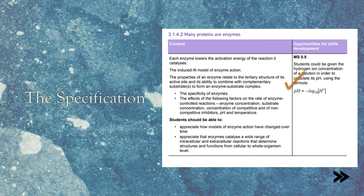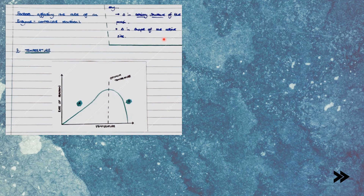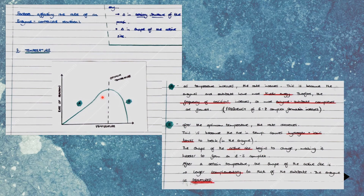Next, we'll look at the effect of a few factors upon the rate of enzyme-controlled reactions. First, temperature. As the temperature increases, the rate of reaction increases, because enzyme and substrate molecules have more kinetic energy, so the frequency of collisions between these molecules increases, and more enzyme-substrate complexes are formed per minute. However, after the optimum temperature, the rate begins to decrease. This is because the rise in temperature causes hydrogen and ionic bonds which hold the enzyme's tertiary structure in place to break, altering the tertiary structure and changing the shape of the active site, so that it is no longer complementary to that of the substrate. The enzyme is said to be denatured. In an exam, say that there is a change in the tertiary structure of the enzyme, causing a change in the shape of the active site.